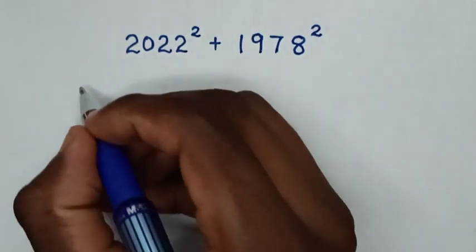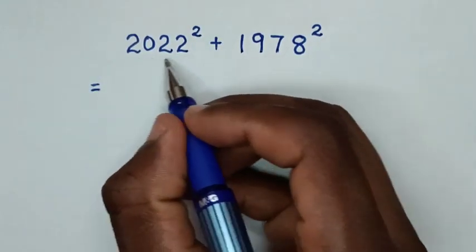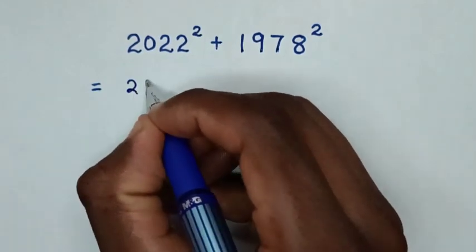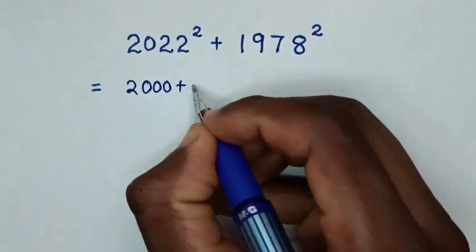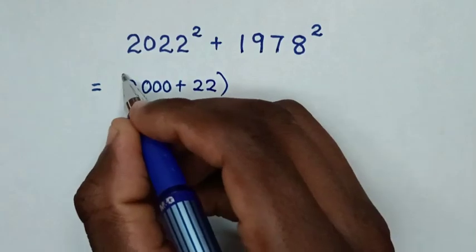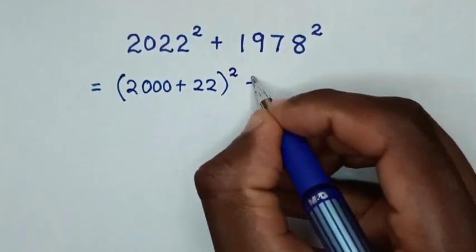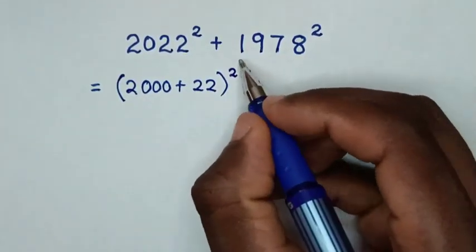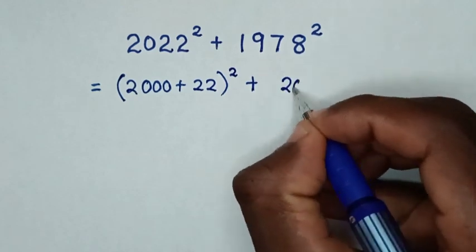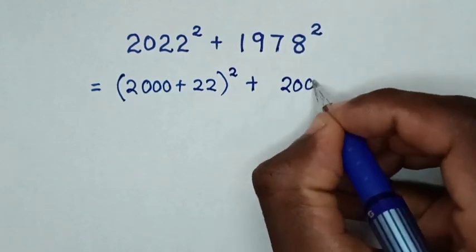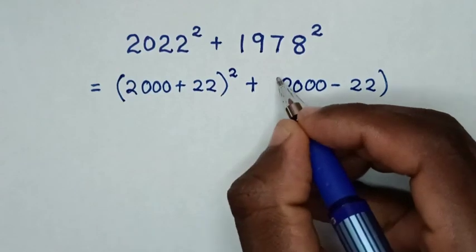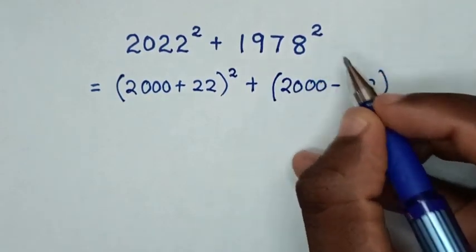So it will be equal to: 2022 is the same as (2000 + 22) squared, then plus 1978 is the same as (2000 − 22) squared.